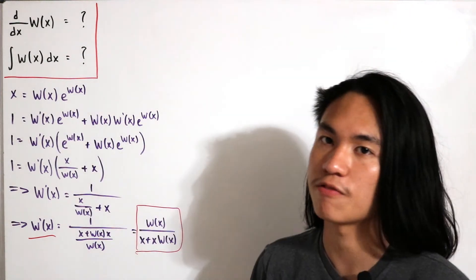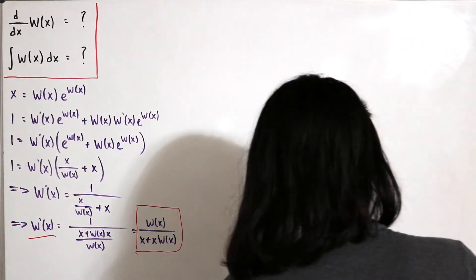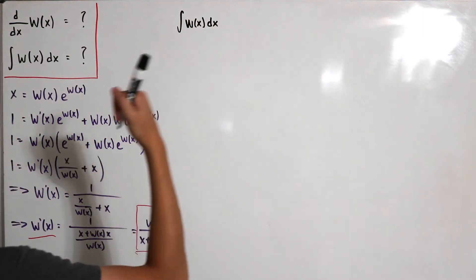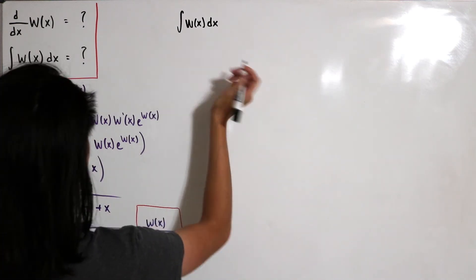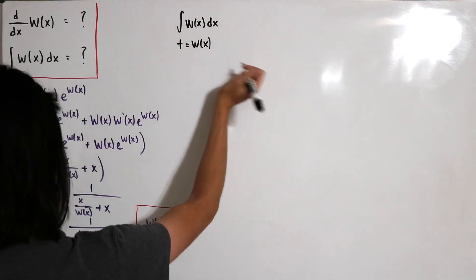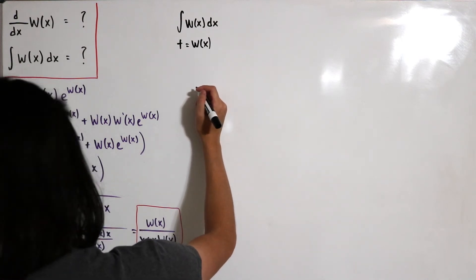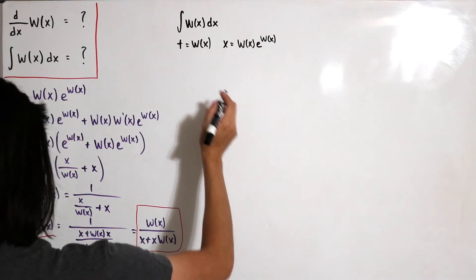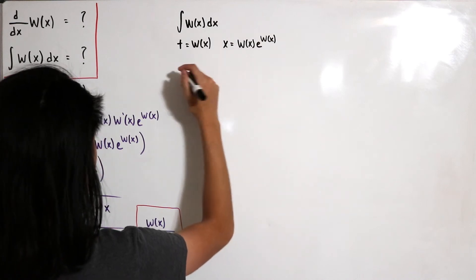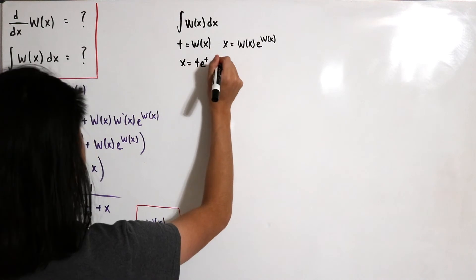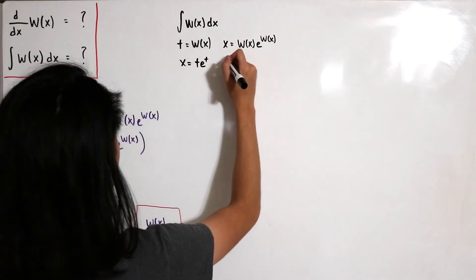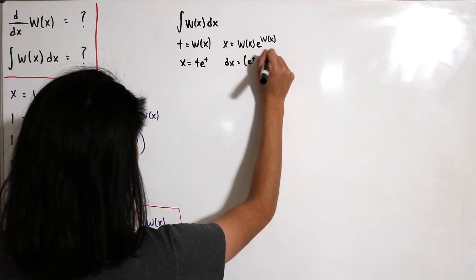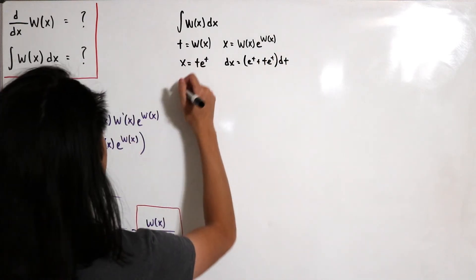Now let's calculate the indefinite integral of W(x) dx. We use the substitution t = W(x). From the definition, x = W(x)·e^(W(x)), so replacing W(x) with t gives x = t·eᵗ. Differentiating both sides using the product rule: dx = (eᵗ + t·eᵗ) dt.